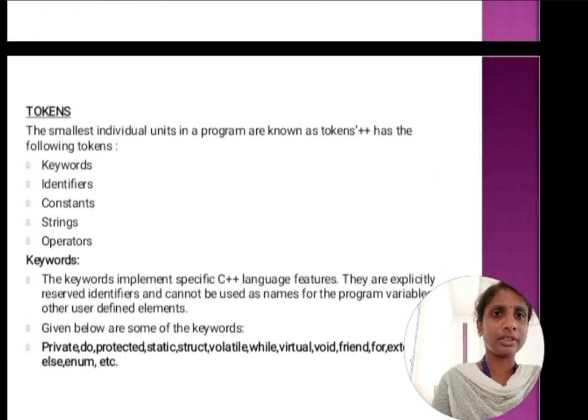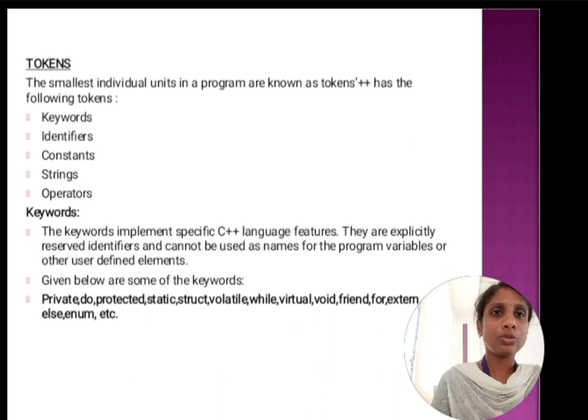Next important thing is tokens. The smallest individual unit in a program is known as tokens. The classification of tokens are keywords, identifiers, constants, strings, and operators. This collectively is called tokens. Here first, we are going to discuss about keywords.